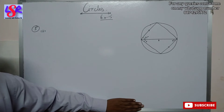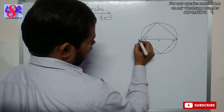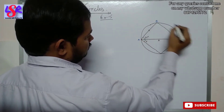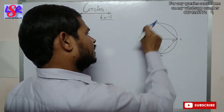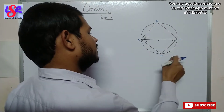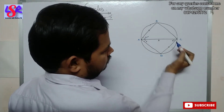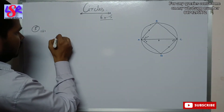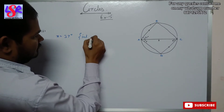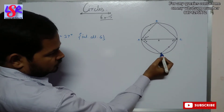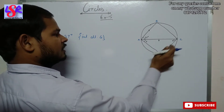Now question number 5 second part. We name the points A, B, C and D. We have been given that AB is parallel to CD. Since AB is parallel to CD, angle X is equal to 37 degrees as interior alternate angles.